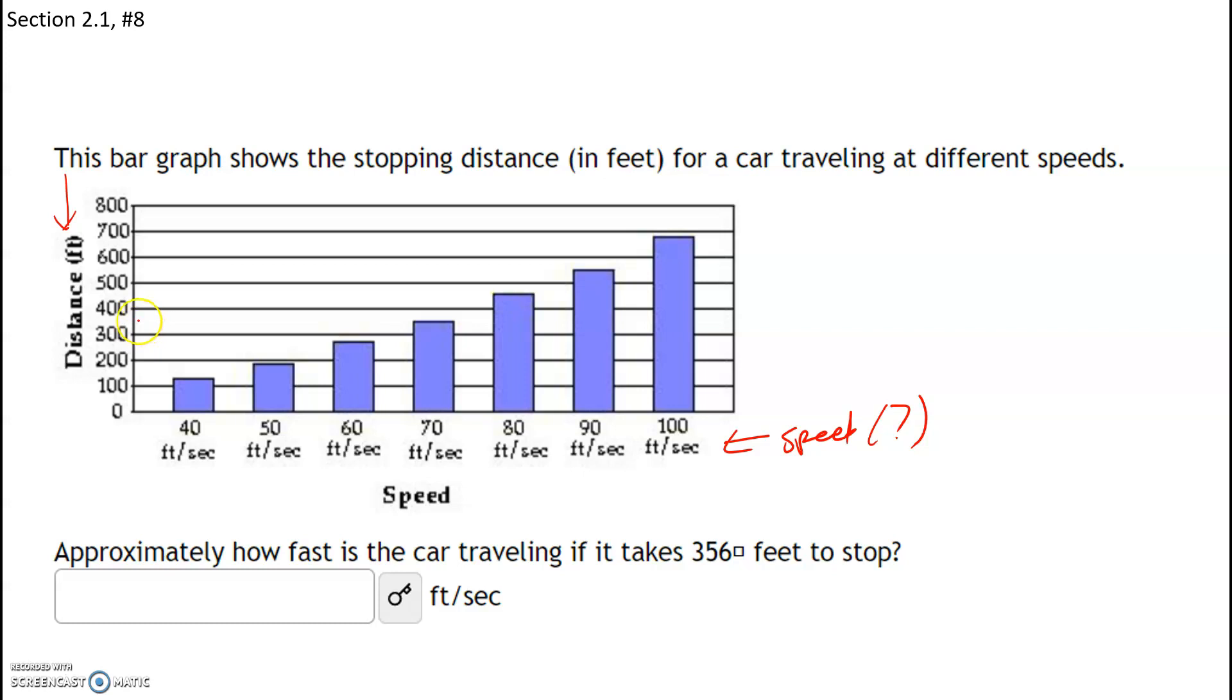So 356 is going to be about halfway between 300 and 400. That's approximately 356. Now I want to know, if that's the distance it takes to stop, I'm going to take that over and see which bar graph it hits, and it's going to hit this graph. So it takes about 70 feet per second to stop.